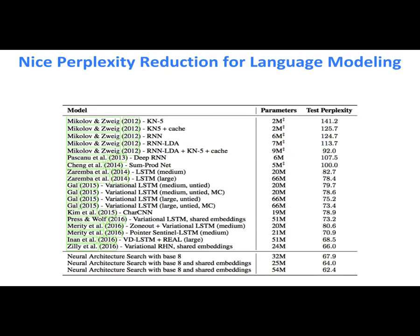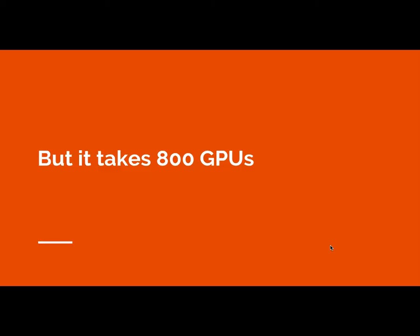Quoc Le and Zoph found that neural architecture search on RNNs produces much lower test perplexity than other methods at that time. However, this requires about 800 GPUs — a major flaw. While great in principle, you can't do it without Google-level compute. Additionally, with 800 GPUs running a small amount of math, is NAS really doing something, or is it just random search?